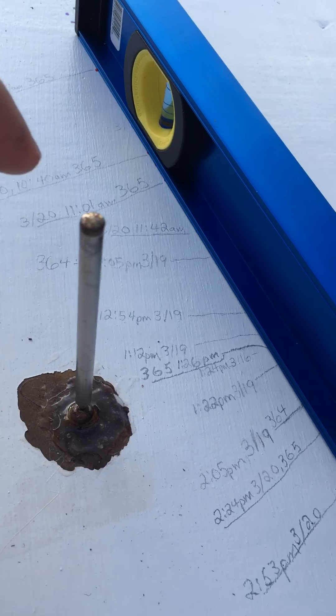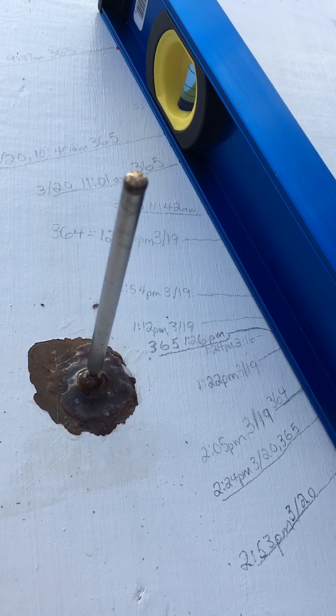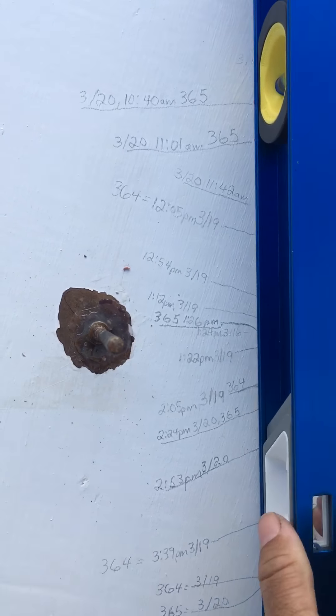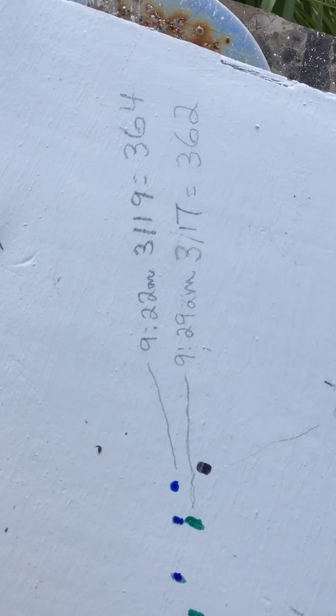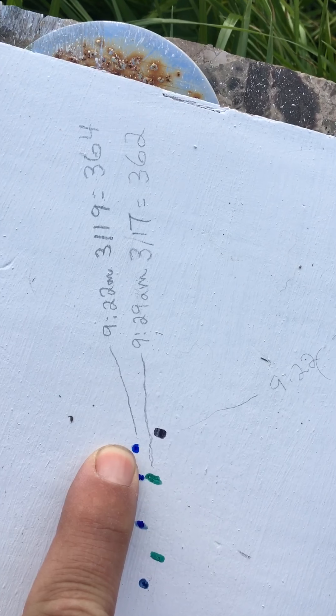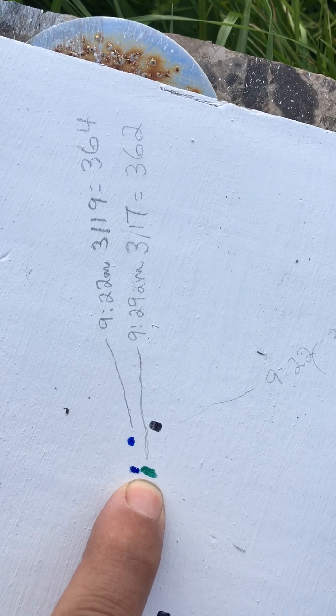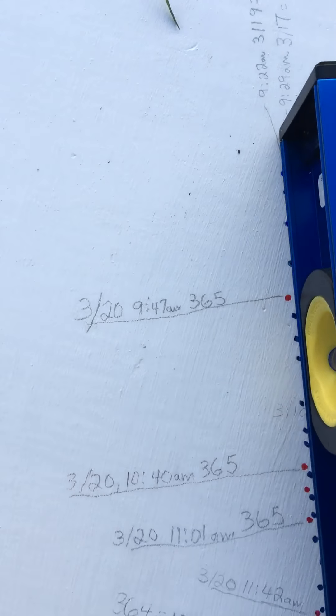I used one of these magnet pickup sticks when I did this. Let me show you the blue line from yesterday — there's the blue line, day 364, 3/19. The green line is the day 362 line I went over earlier in the videos. Let me put it on the blue line and try to line it up. I was only able to get to a certain time yesterday because the sun was going away.